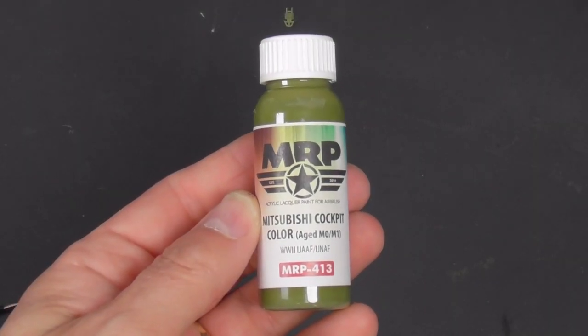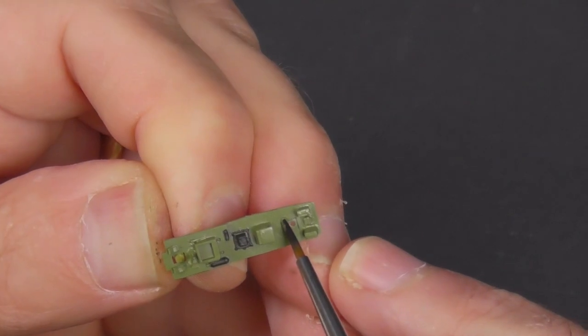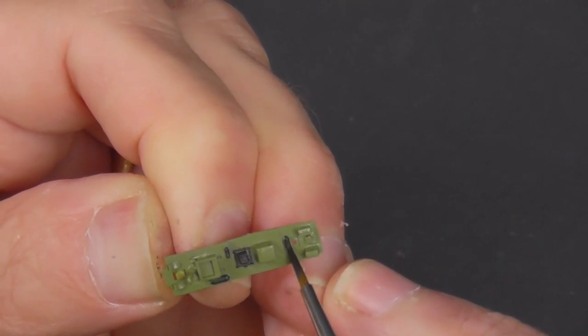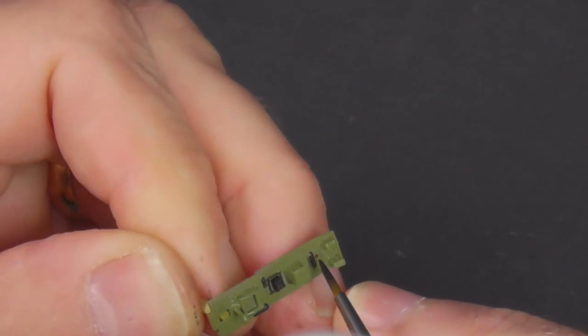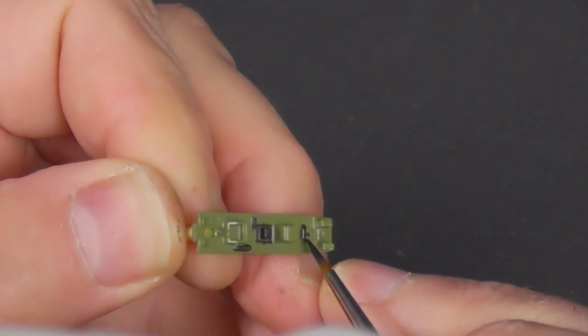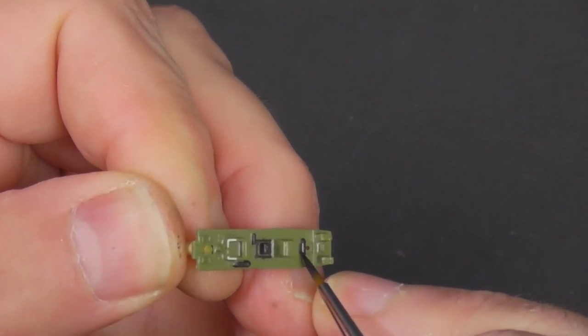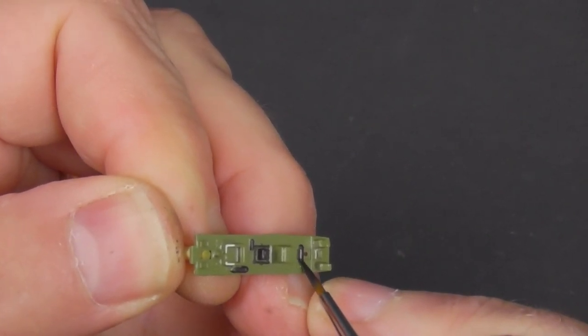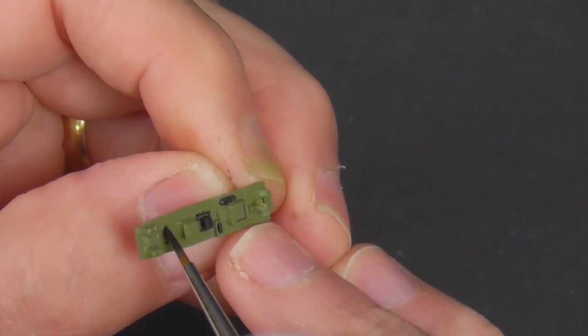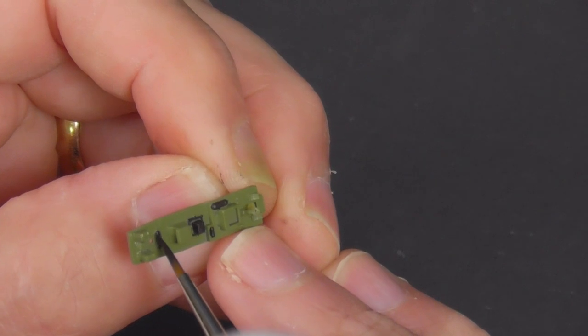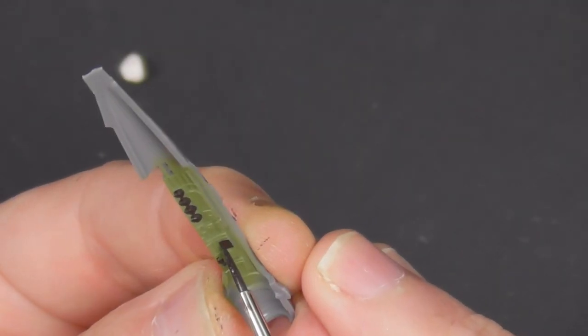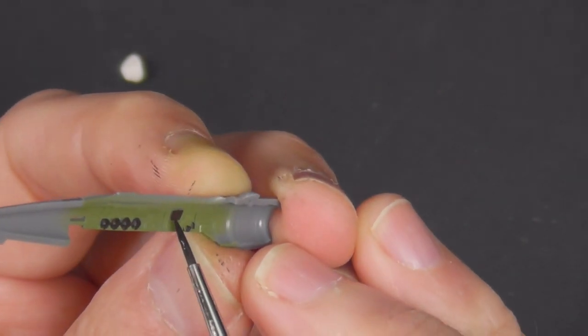Starting off with the cockpit obviously and you can see the beautiful detail, it really is quite phenomenal and will definitely benefit from some careful painting. So after a base coat using MRP interior green, out with the brush and all the little details were painted. You can just see there the Optivisor on the top of my head sneaking into shot, absolutely vital because as you can see it's tiny.